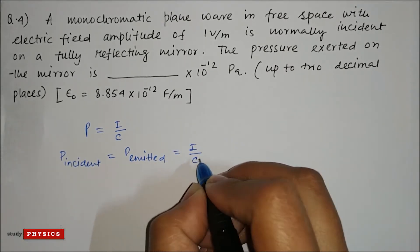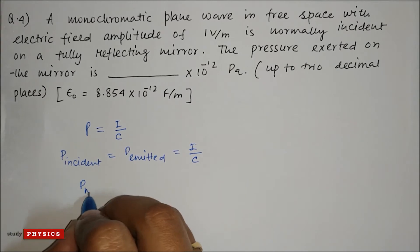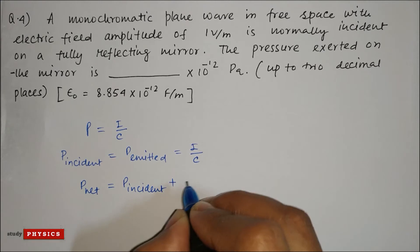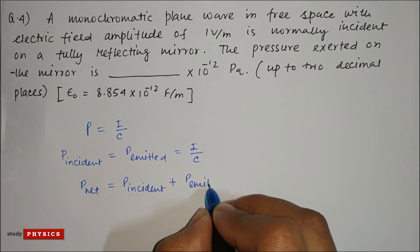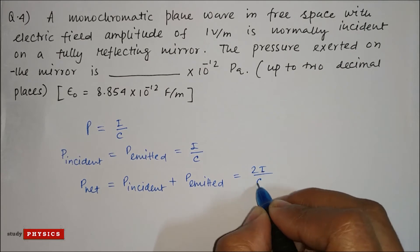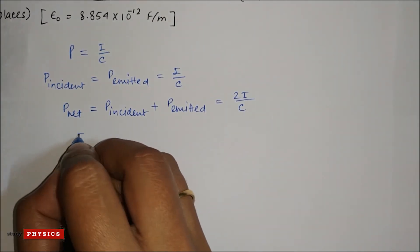That means net pressure is P_incident plus P_emitted equal to 2I divided by c. And we know that intensity...